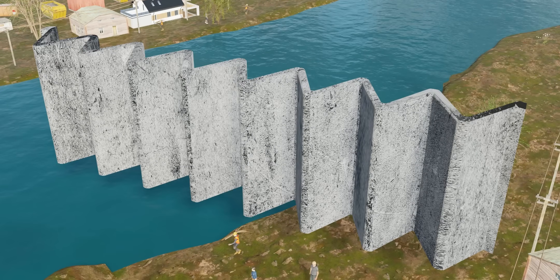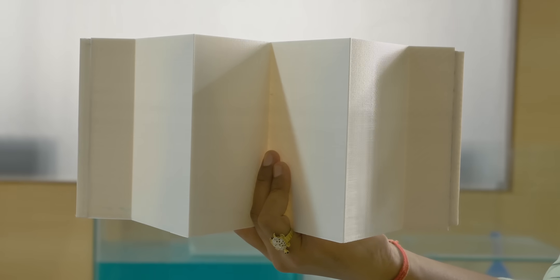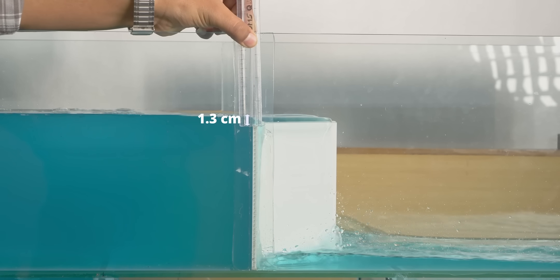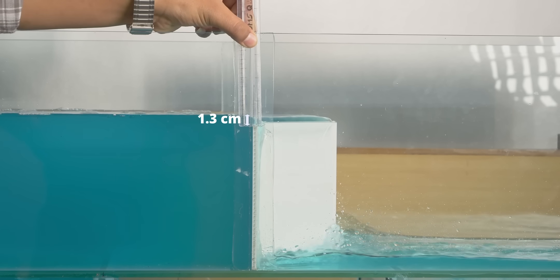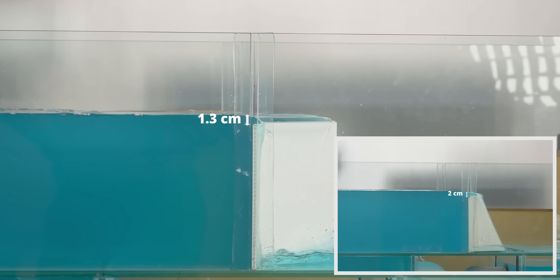What about this zigzag weir? Let's try this in the open channel flow. This is the zigzag weir we 3D printed. The water level above the weir level in the case of a zigzag weir is just 1.3 cm at the maximum flow rate. Remember, the water level was at 2 cm height in the case of normal rectangular weir.